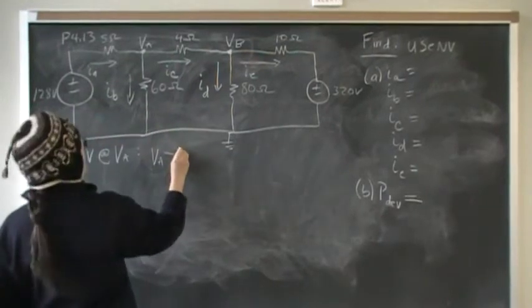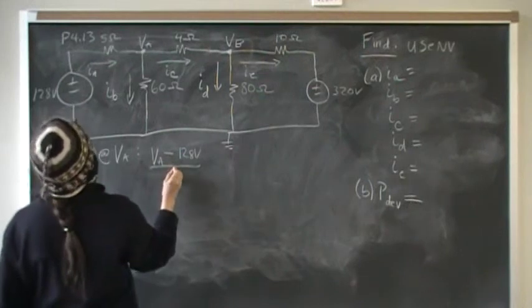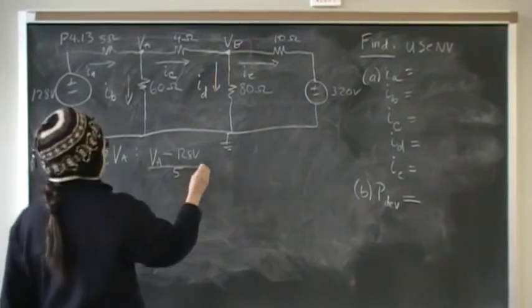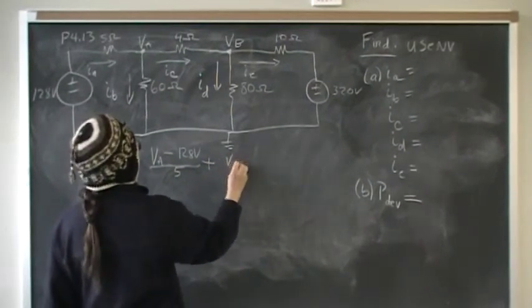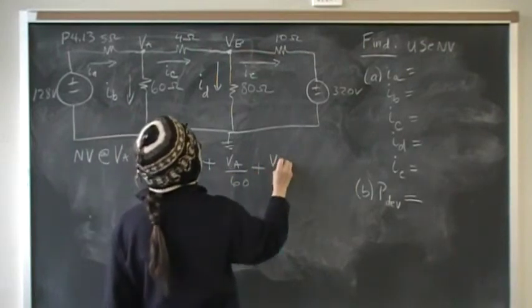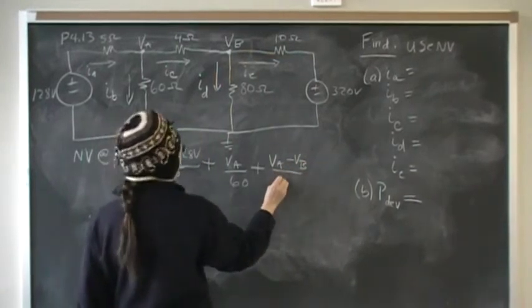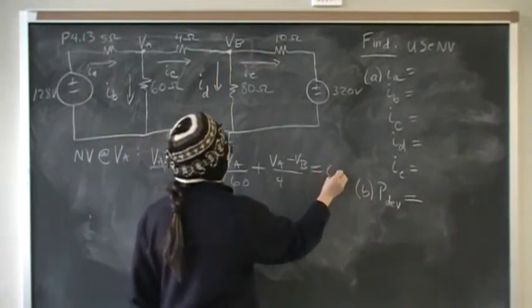We have VA minus 128 volts over 5, that's one branch current, plus VA over 60, that's the second branch current, and the third branch current is VA minus VB over 4. All of that should equal zero.